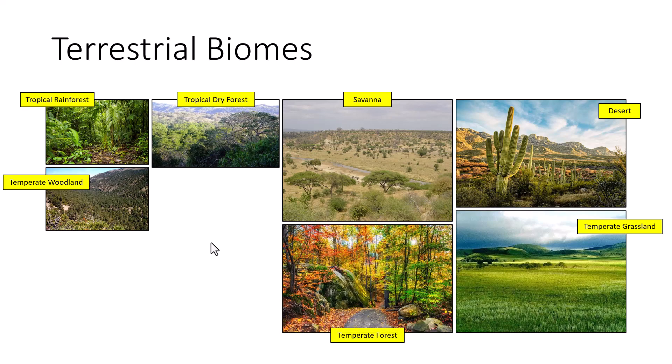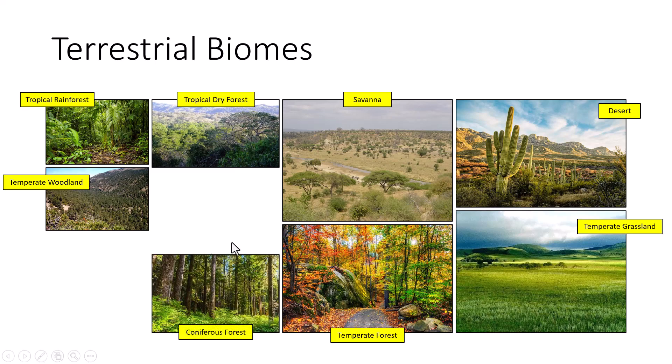Temperate forests bring in deciduous trees as well as coniferous trees higher up in the mountains. They have cold to moderate winters, warm summers, and year-round precipitation sufficient to support large tree groves. Moving into the northern or northwestern coniferous forests, you have mild moist air with abundant rainfall. Most trees are coniferous — evergreens. Winters and springs are cold, summers are dry, and soils are rocky and acidic due to fallen pine needles dropping the soil pH.